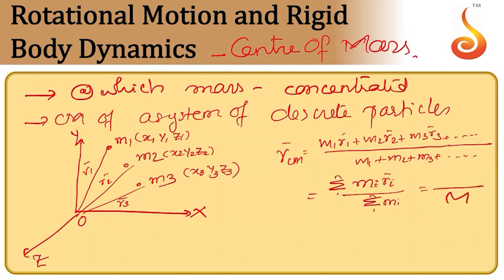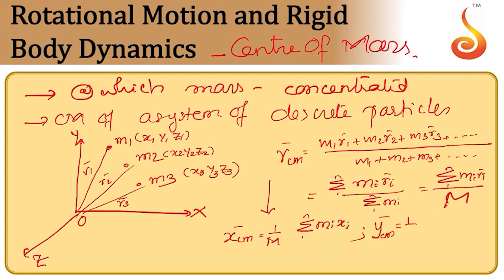So I can simply write it as (1/M)·sigma(mi·ri) from 1 to n. This can be broken up into three parts — one along x-axis, the other along y-axis and the other along z-axis. So we have x_cm equal to (1/M)·sigma(mi·xi), y_cm equal to (1/M)·sigma(mi·yi). For a system of discrete particles, this is how you find the center of mass.